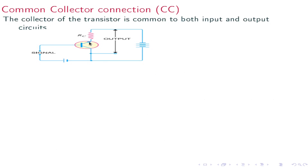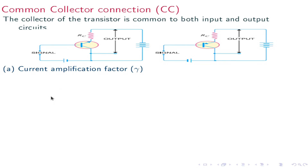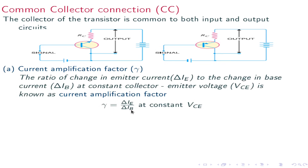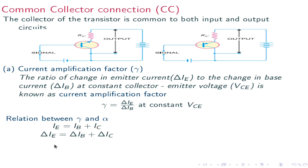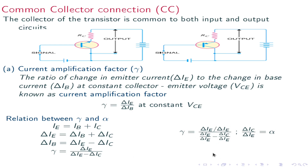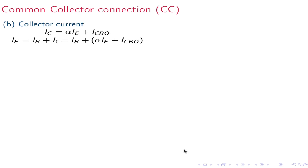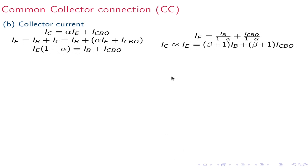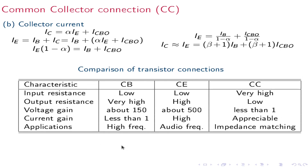In the common collector connection, the collector is common to both input and output. The current amplification factor gamma equals delta Ie divided by delta Ib at constant Vce. The relation between gamma and alpha: gamma equals delta Ie divided by delta Ib, which equals delta Ie divided by (delta Ie minus delta Ic), giving gamma equals 1 divided by (1 minus alpha). The total current in the common collector configuration: Ic is approximately equal to Ie, which equals (beta + 1)Ib plus (beta + 1)Icbo.